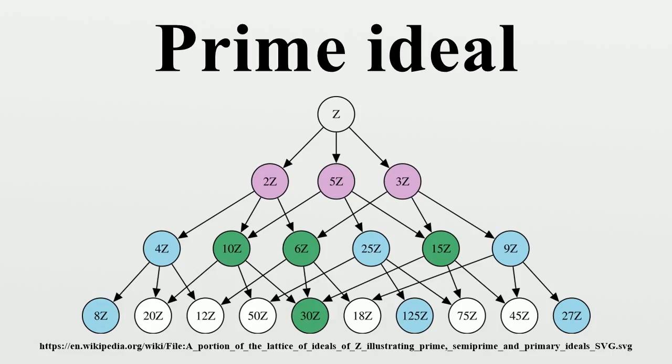The set of all prime ideals contains minimal elements. Geometrically, these correspond to irreducible components of the spectrum.